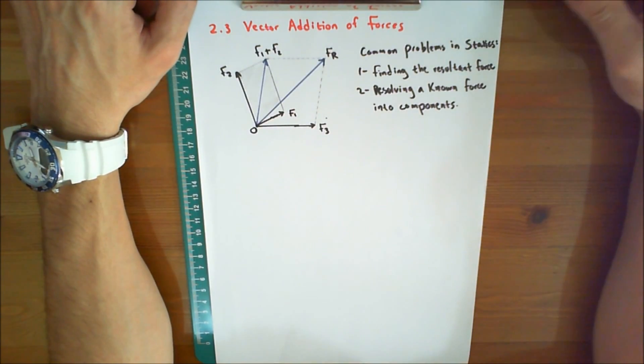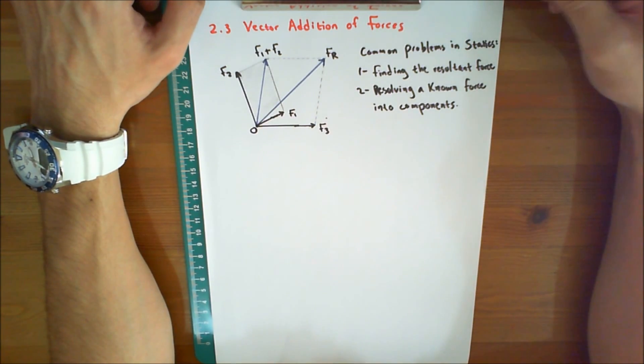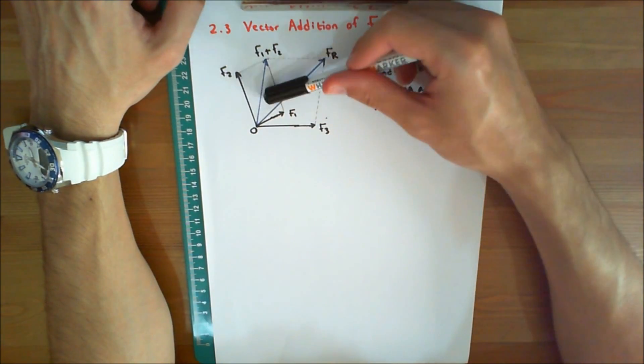Vector addition of forces. Experimental evidence has shown that a force is a vector quantity since it has a specified magnitude, direction, and sense, and it adds according to the parallelogram law.